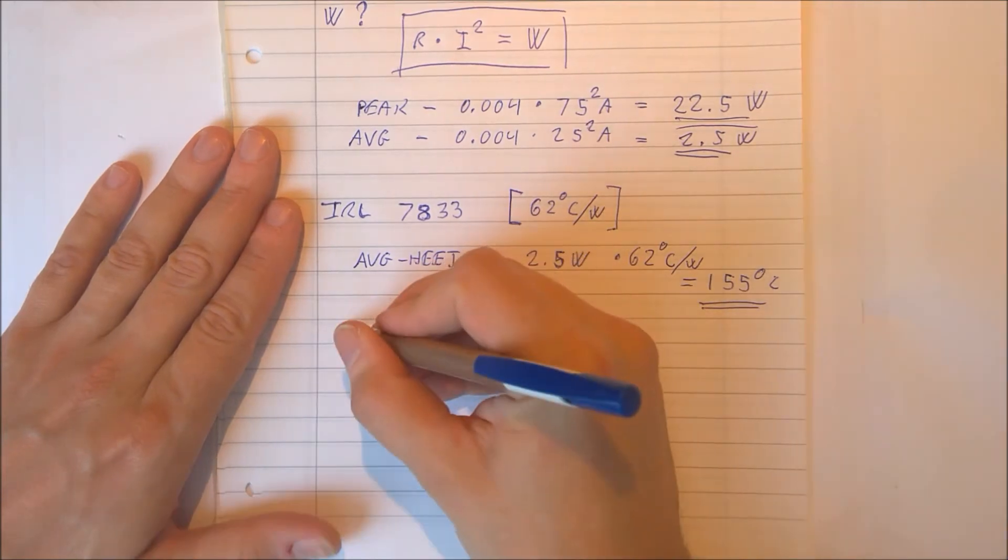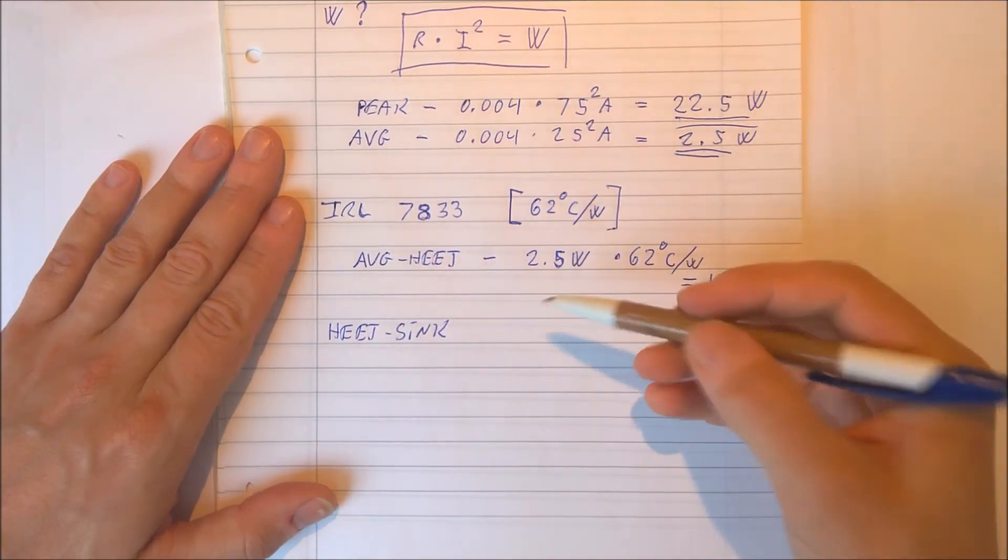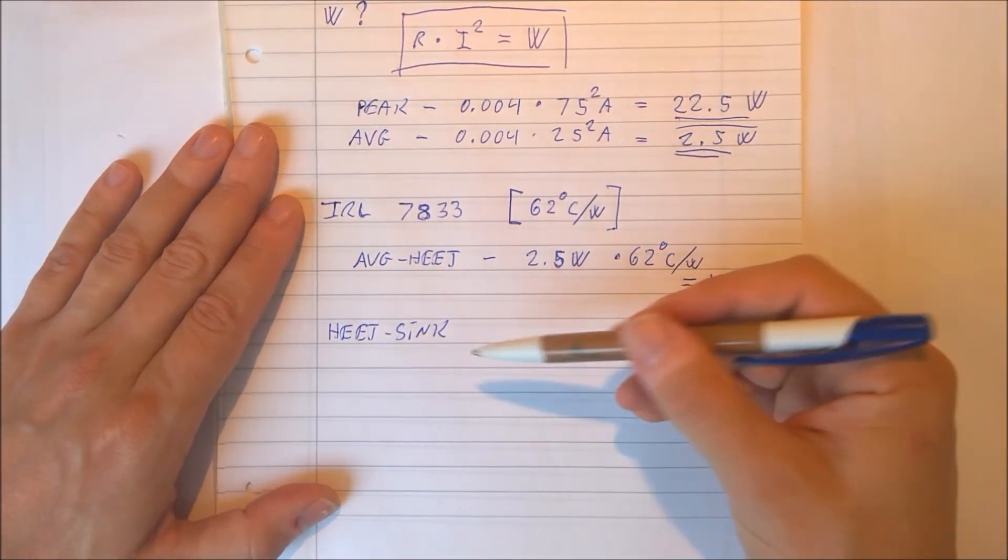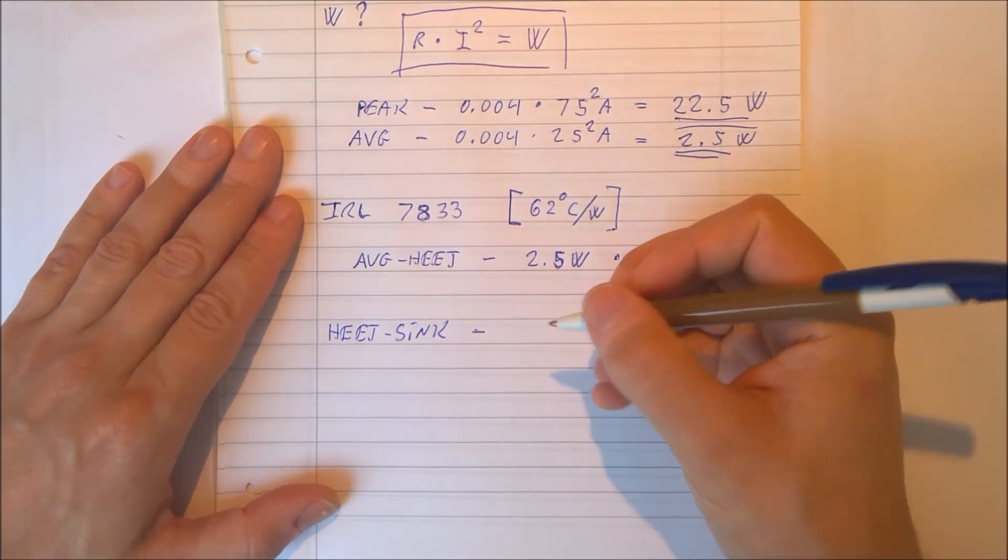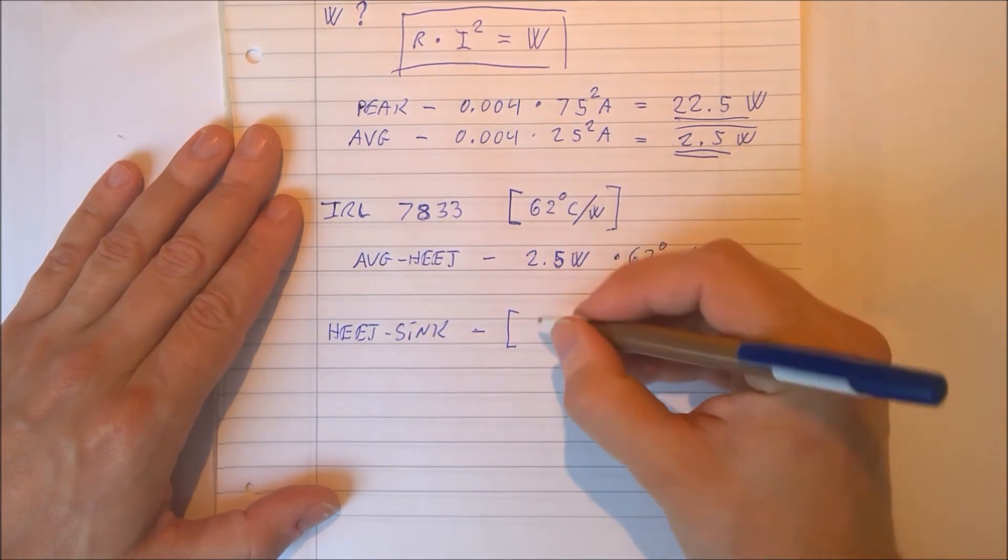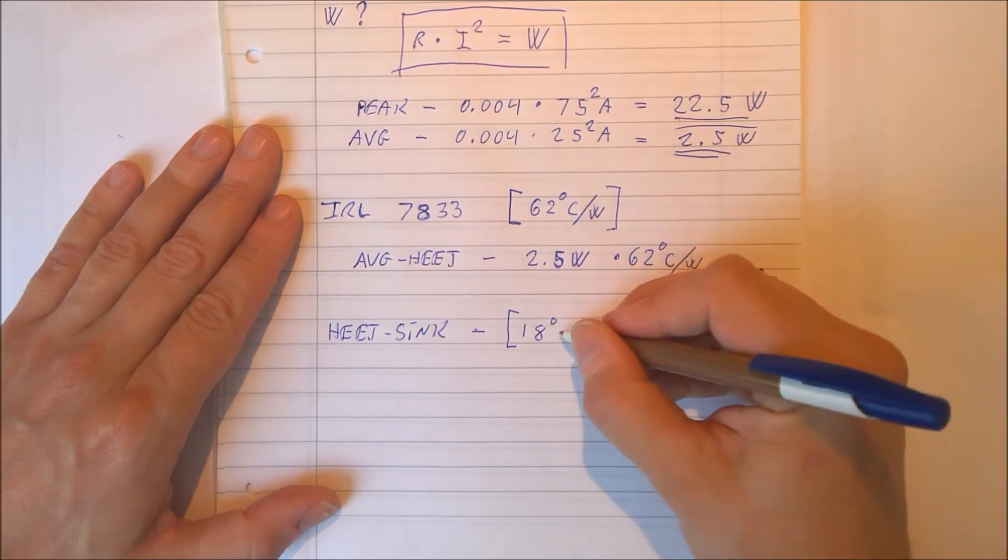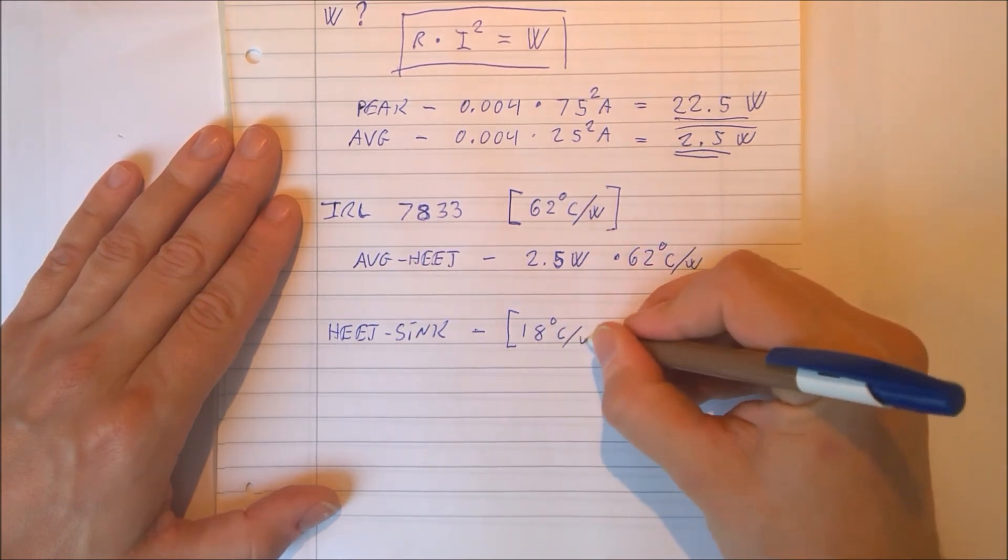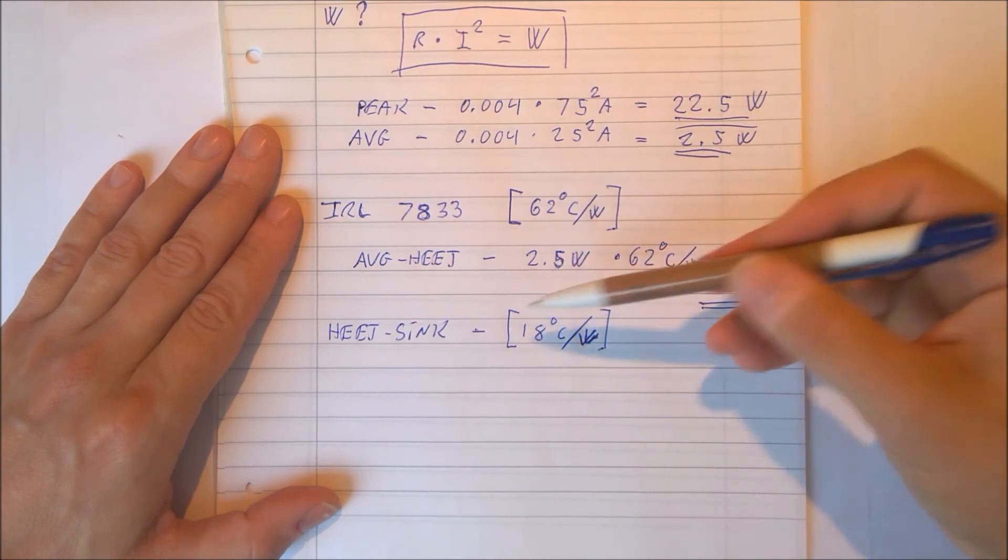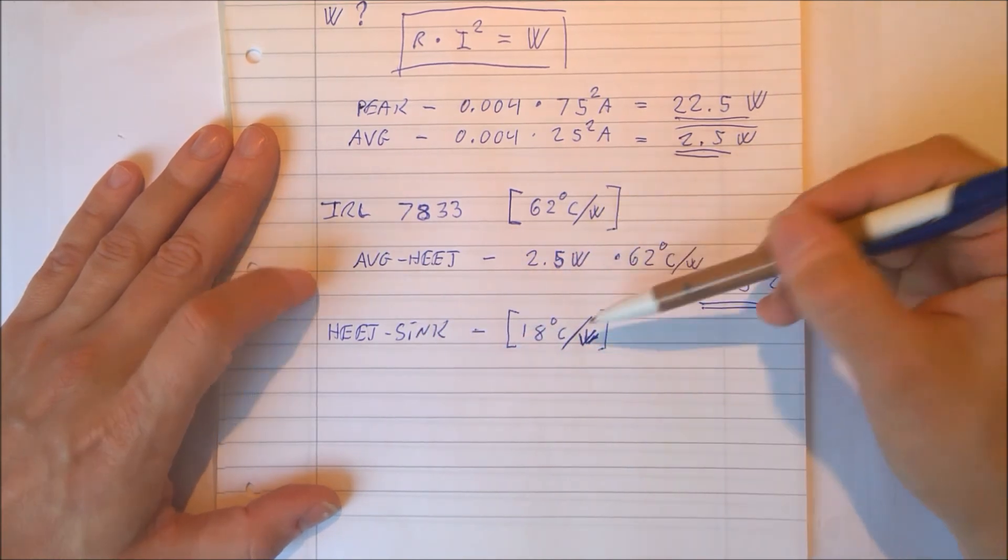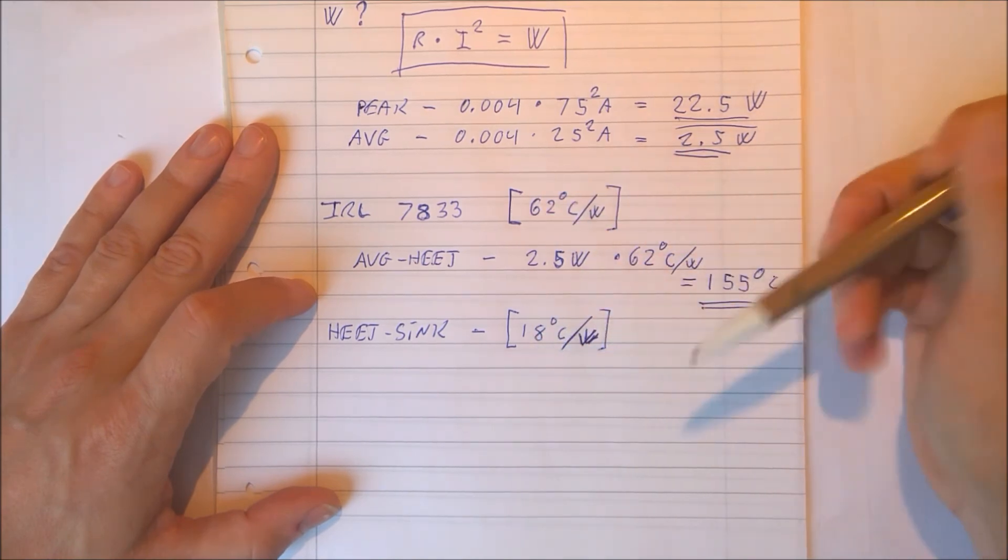One thing that you can do is add a heatsink, which is basically a piece of metal that will then dissipate some of the heat. The heatsink I have has a specification that says it has a rating of 18 degrees Celsius per watt. That means when this heatsink is used, the heat dissipated will instead of being 62 degrees be 18 degrees per watt.